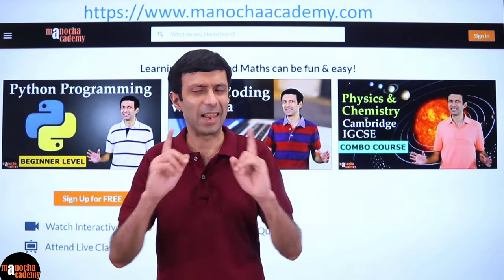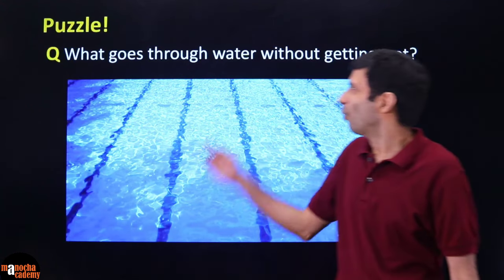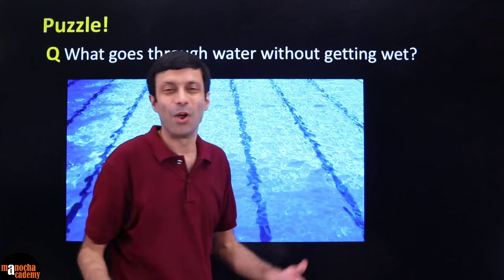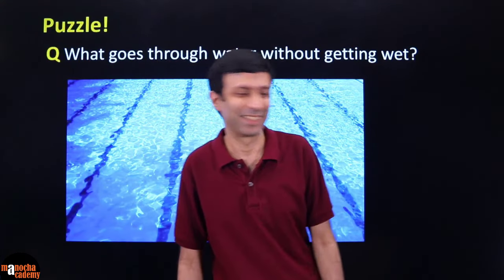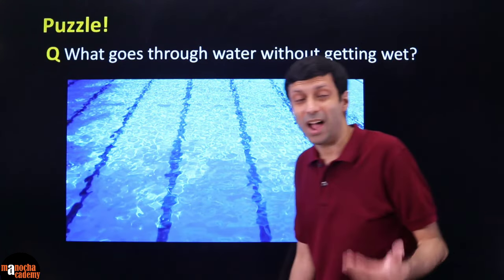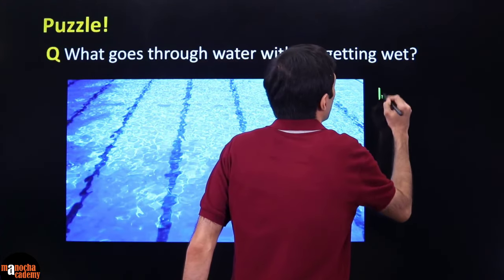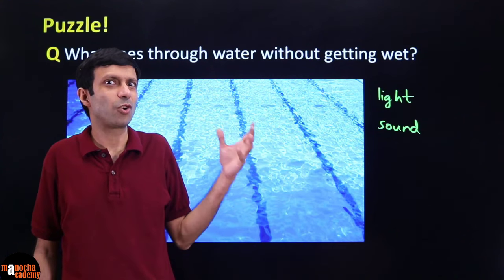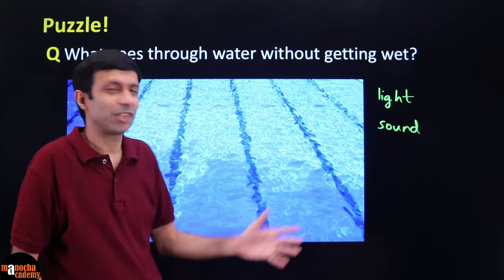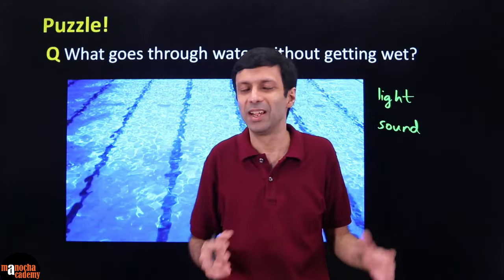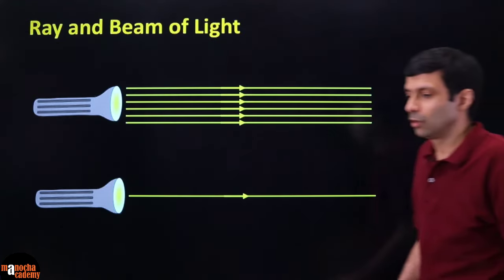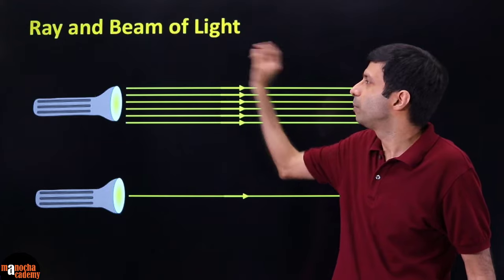Let's start with a puzzle: what goes through water without getting wet? The answer is light and sound — because these are not matter, they are forms of energy, so they can pass through water without getting wet. We are going to be dealing with light today in the reflection of light topic. Light is an electromagnetic wave, a form of radiation.